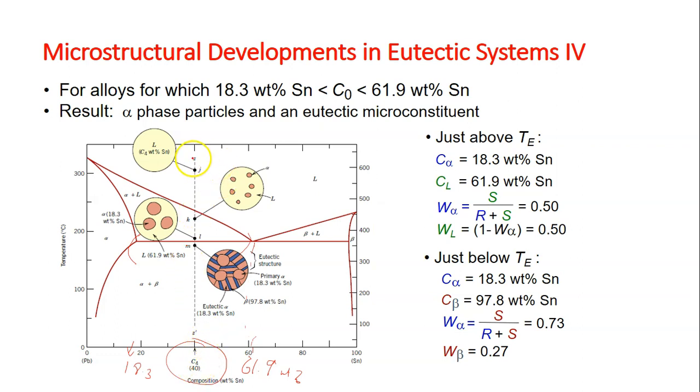This alloy cools following the Z-Z' dashed line. At point J, all of the alloy is in liquid phase with no formation of solids. Further cooling results in the formation of alpha particles because it enters the alpha plus liquid region.